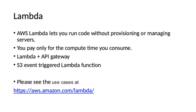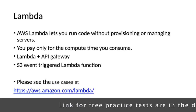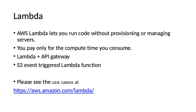AWS Lambda lets you run code without provisioning or managing servers, and you pay only for the compute time you consume. You can invoke an Amazon Lambda function over HTTPS — this is where we use API Gateway integrated with Amazon Lambda. When you send an HTTP request to the API endpoint, the Amazon API Gateway service invokes the corresponding Lambda function. You can also use Amazon S3 to trigger AWS Lambda to process data immediately after an upload — for example, to convert a full image to a thumbnail, transcode a video, index files, process log files, validate content, or aggregate and filter data in real time.